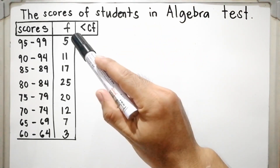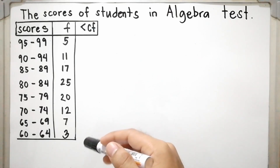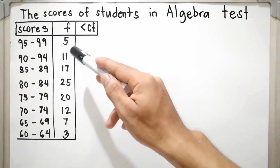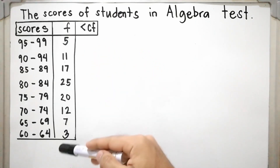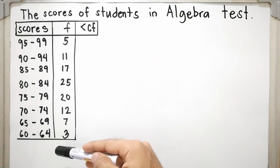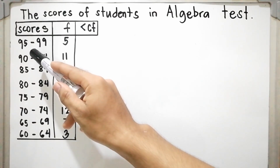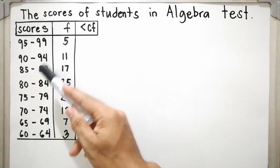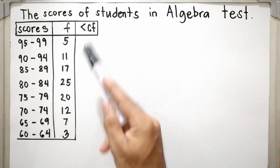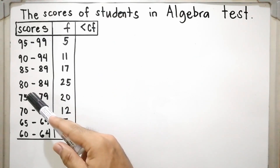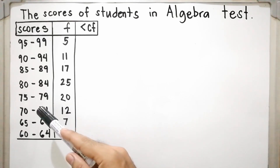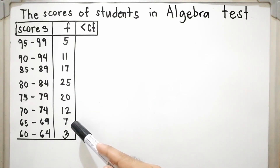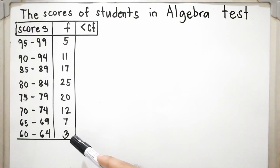Let us have an example: the scores of students in algebra tests. As you can see, it is arranged using a frequency distribution table, where the scores are in terms of class interval and the respondents are in frequency. For 95 to 99, there are 5 students. There are 11 students who got 90 to 94, 17 students who got 85 to 89, 25 students who got 80 to 84, 20 students who got 75 to 79, 12 students who got 70 to 74, 7 students who got 65 to 69, and 3 students who got 60 to 64.